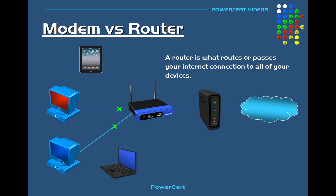The router directs the connection to all of your computers, tablets, phones, and so on so that those devices can access the internet. A typical small office home office router will have a built-in switch with multiple ports so that you can connect multiple devices using an ethernet cable connection. It also functions as a wireless access point so that wireless devices such as tablets and laptops can have internet access.